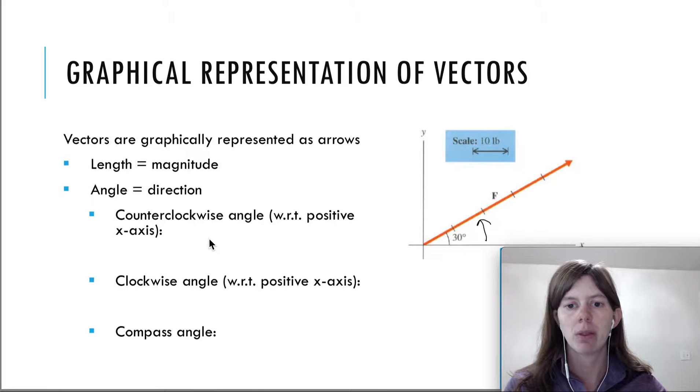However, you could also represent an angle as a clockwise angle. Both of these are with respect to the positive x-axis, which is along to the right here. So a clockwise angle would be this way. What angle do you have to use to go this way? Well, you have 360 for the whole circle, so this angle would be 330 degrees.